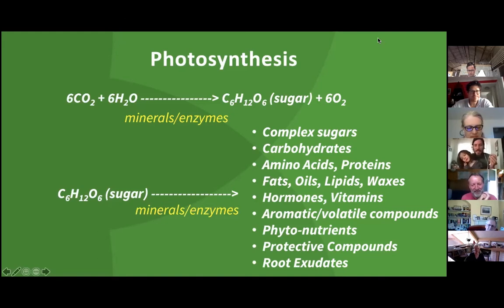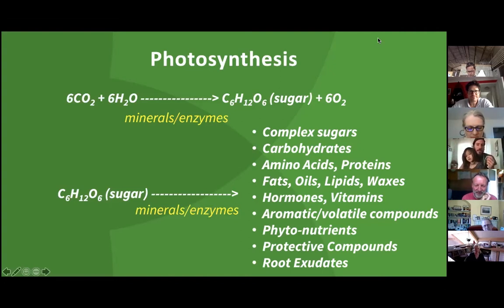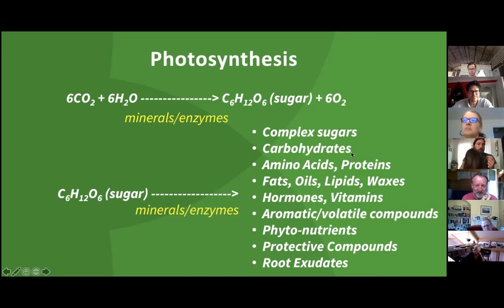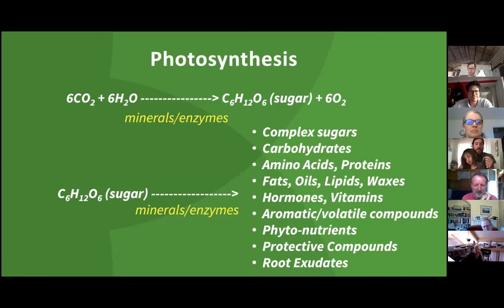Just for everyone's background, what we're trying to assess and measure is how well the plant is photosynthesizing. What we're doing with the Brix meter is measuring the products of photosynthesis, and those products are all of these things on the right-hand side. The point is that you can't produce all of these various products of photosynthesis without nutrients — without the minerals, the macro and micro minerals, the calcium, the zinc, etc.